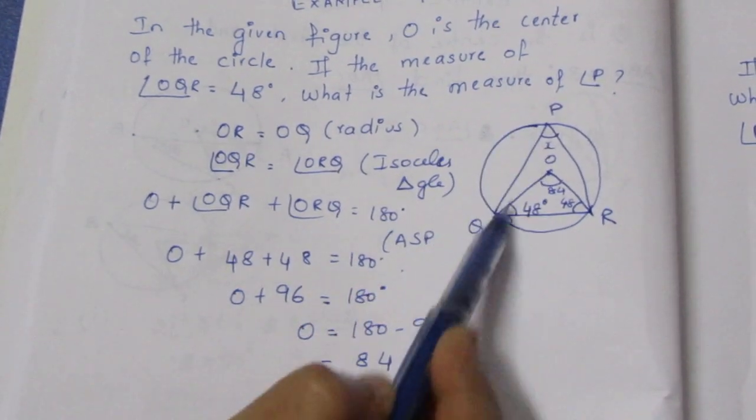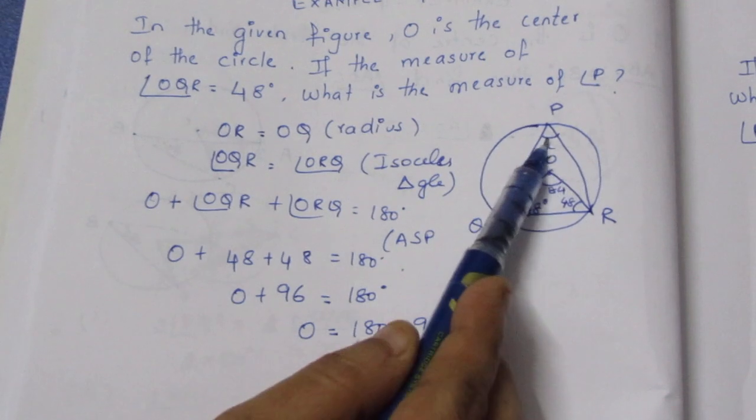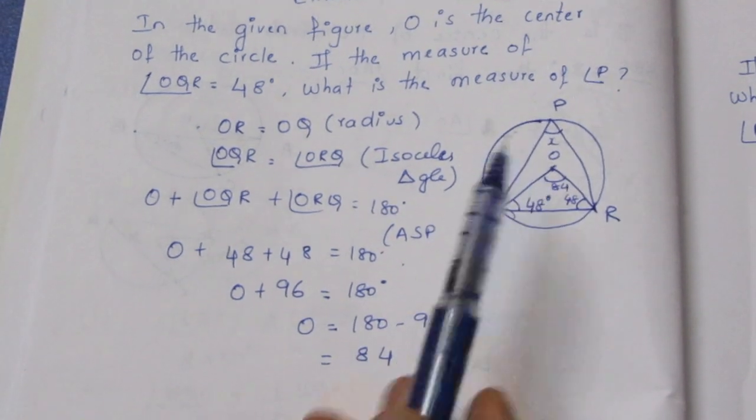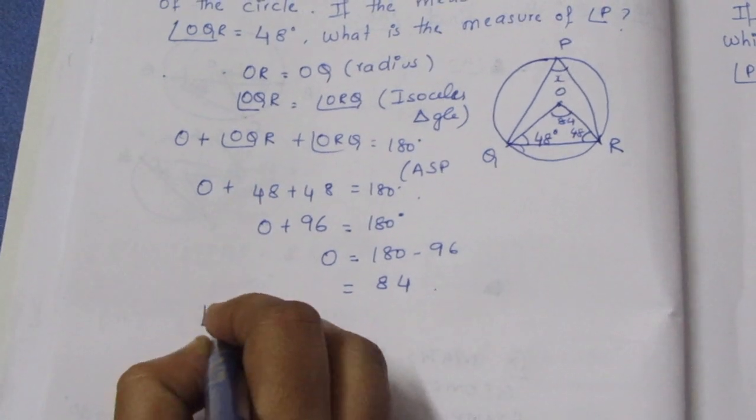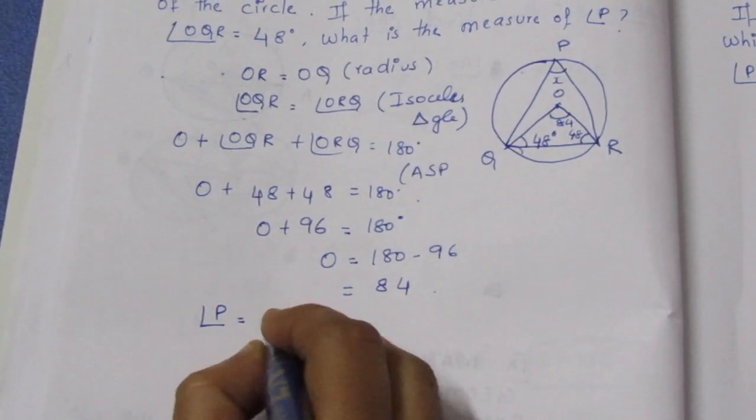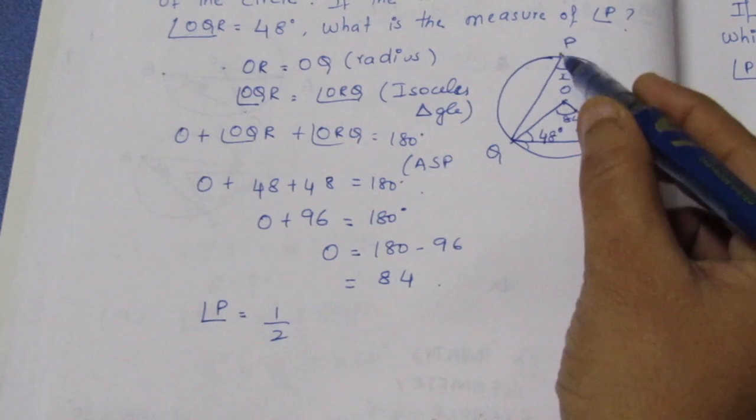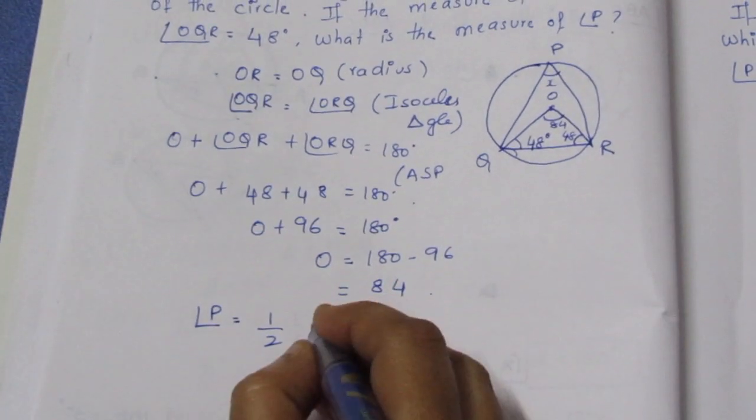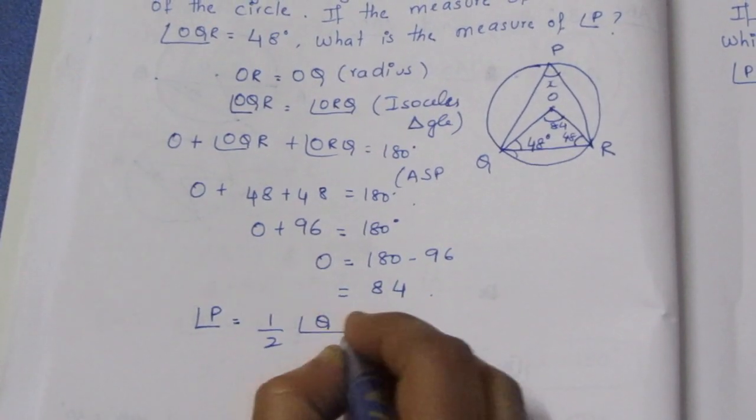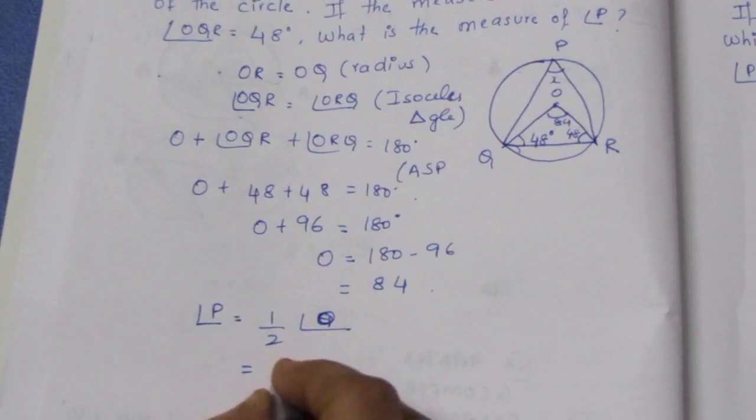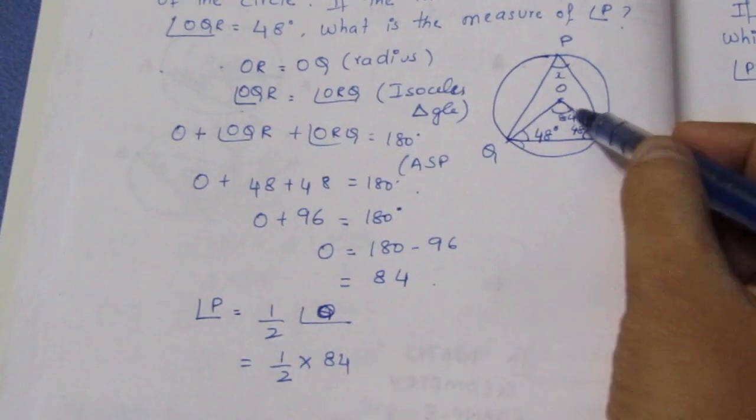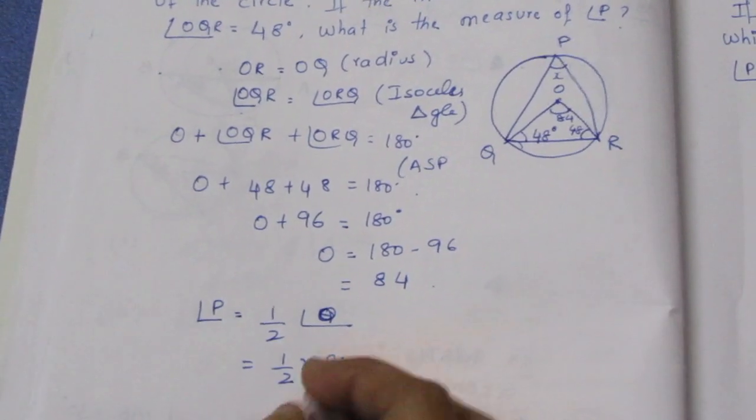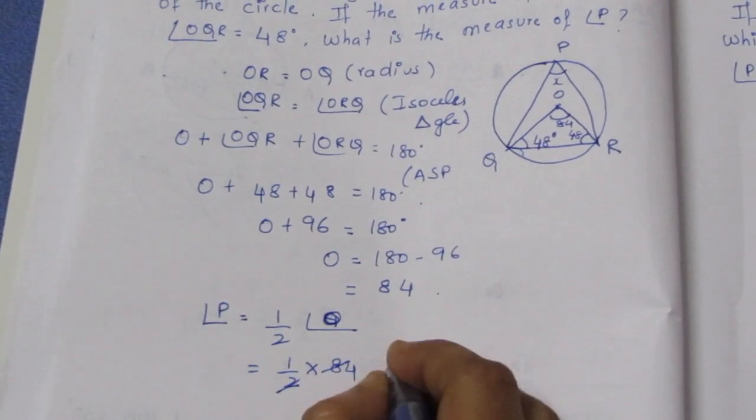If you look at this angle, this is inscribed angle. Angle subtended by an arc at the center is double the angle subtended at the circumference. Angle P equals half of angle O. P equals one-half times 84, which equals 42 degrees.